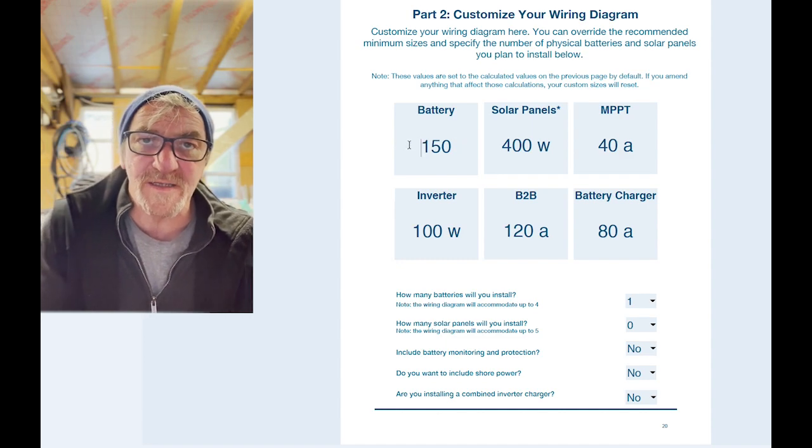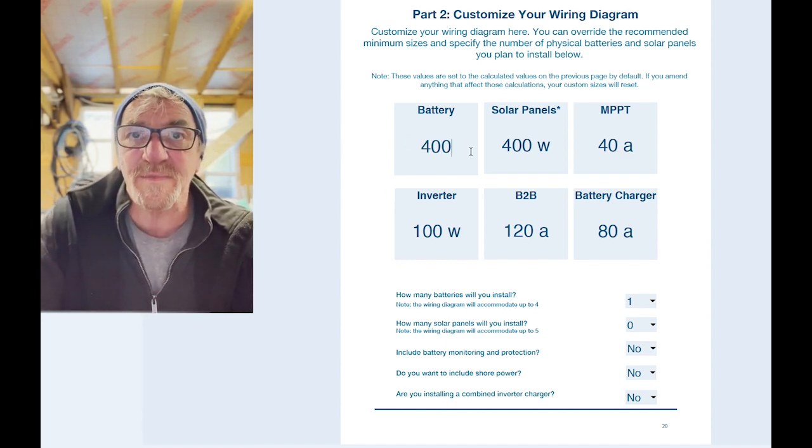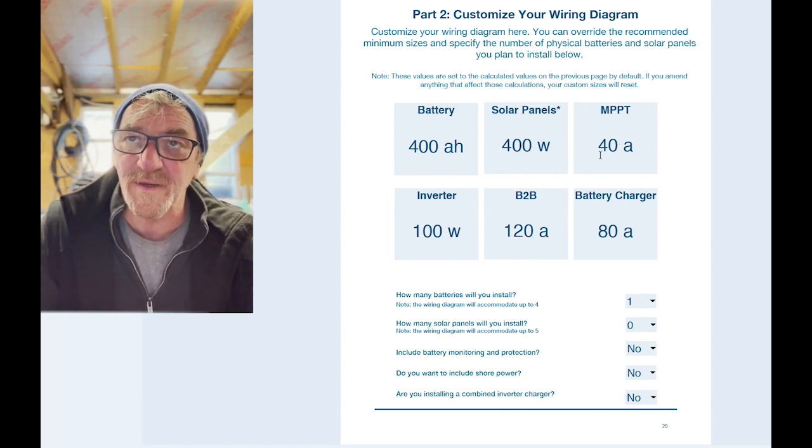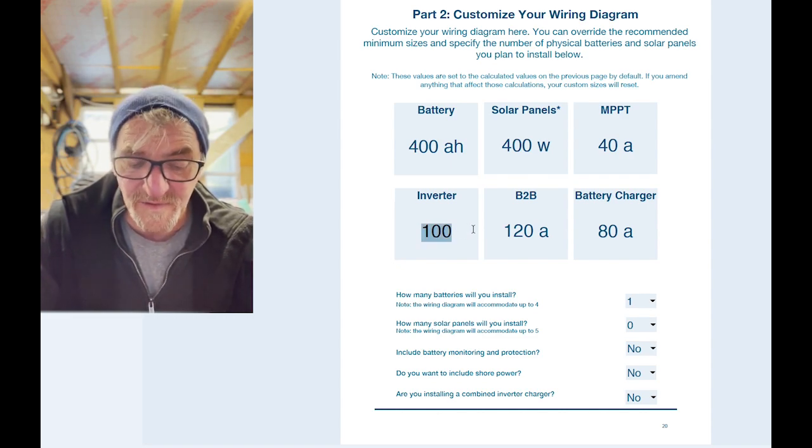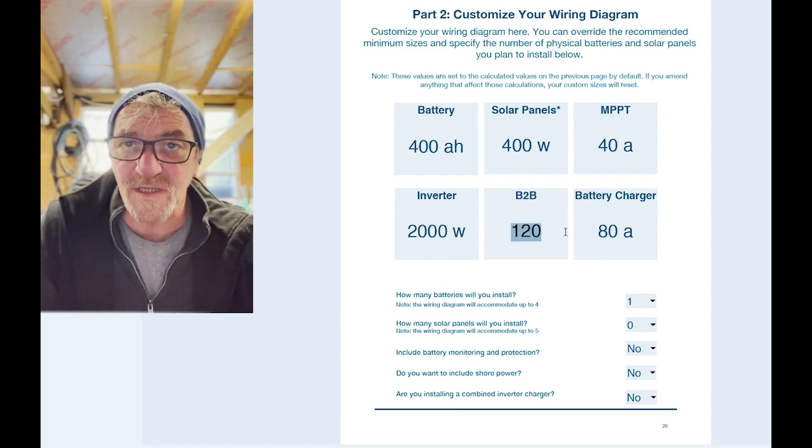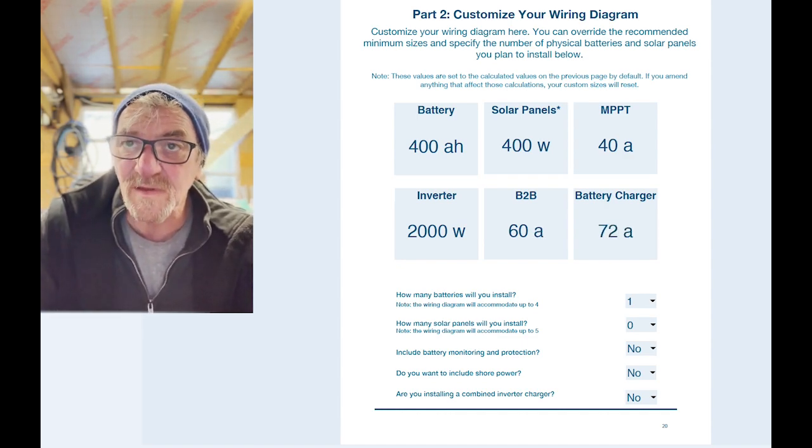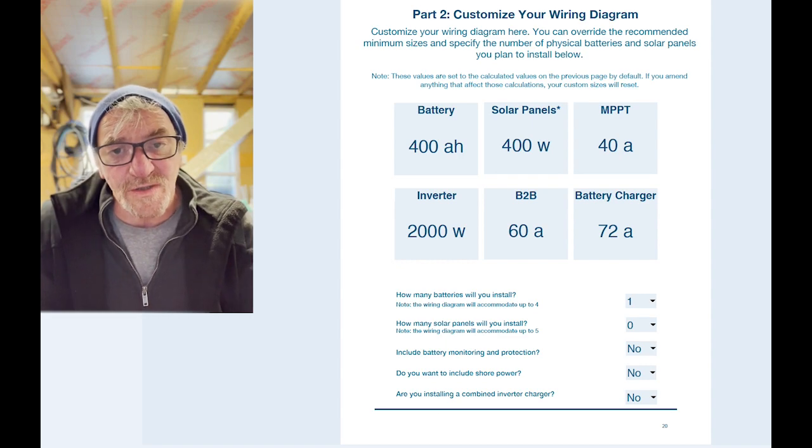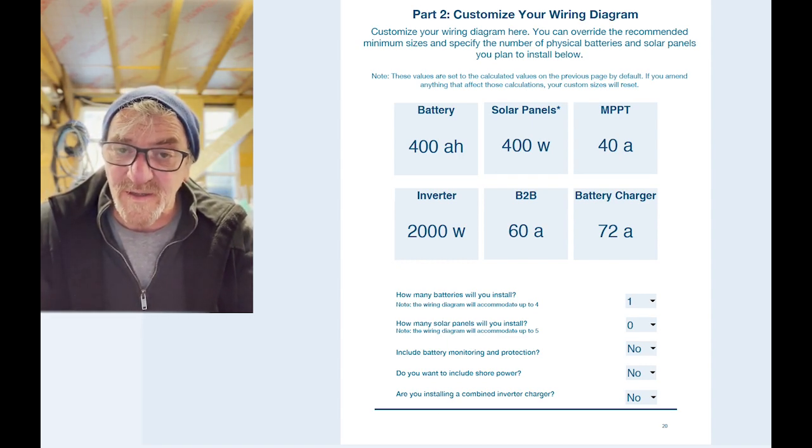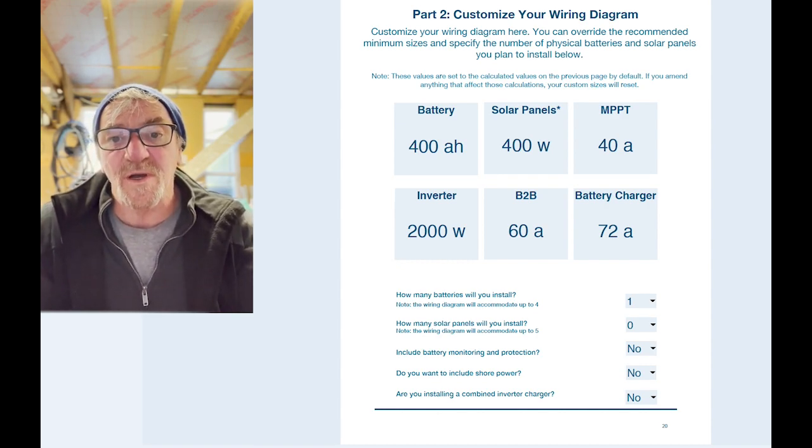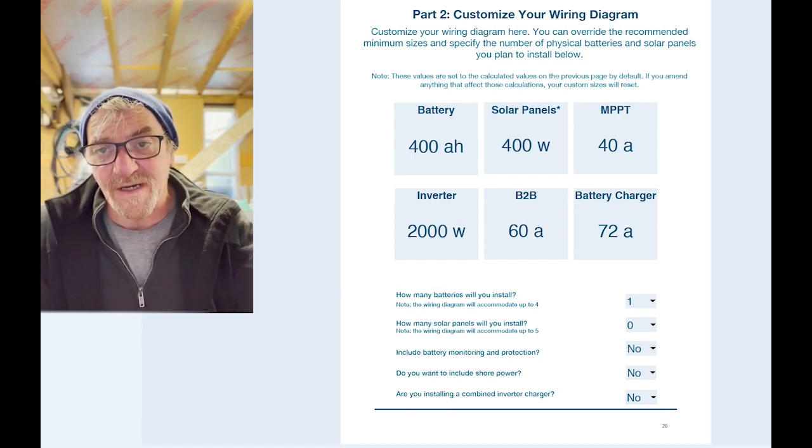Currently in my upgrade I will be installing 400 amps of battery. My panels are 400 watts, 40 amp MPPT controller. But my inverter, I'm going for an inverter charger these days, is a 2000 watt inverter. My battery to battery charger is only 60 amps and my battery charger is 72 amps. So I've gone and increased the sizes of all the components that were recommended, and you can do the same or you can go smaller than was recommended depending on what you have. You just need to reset your expectations if you've gone smaller that you may not get the performance that you're hoping for from the load that you've indicated you're going to use.